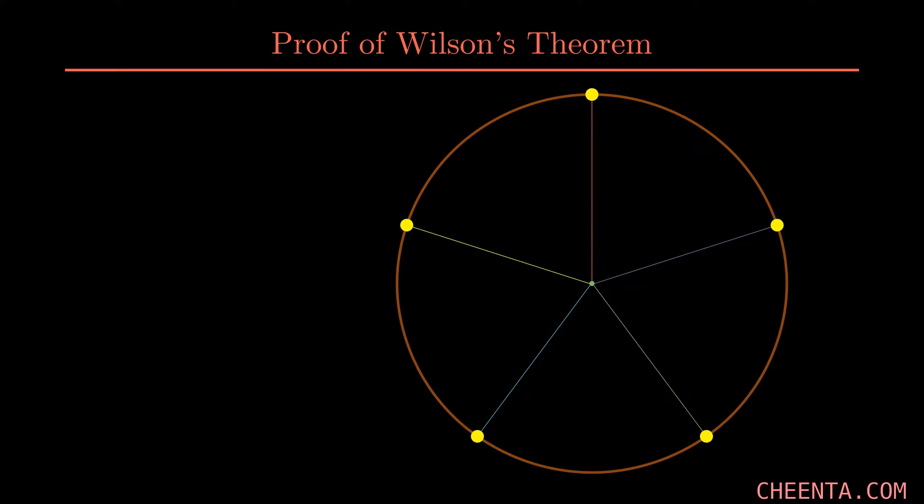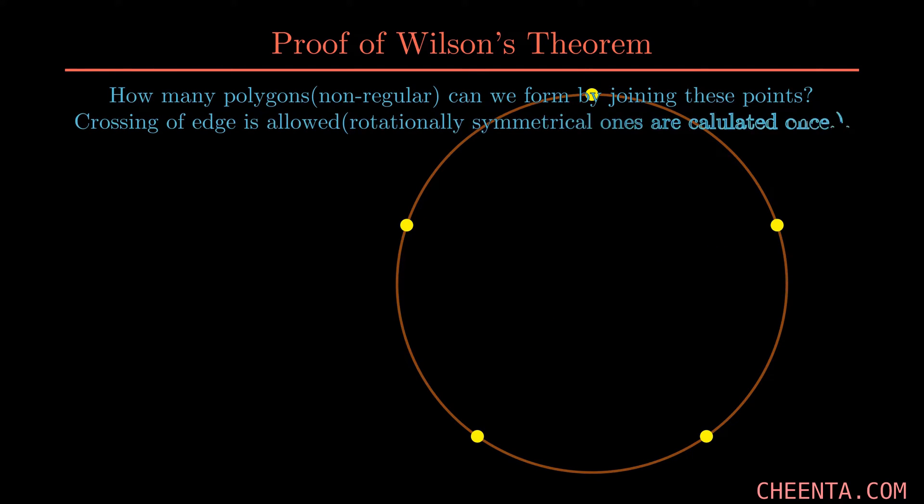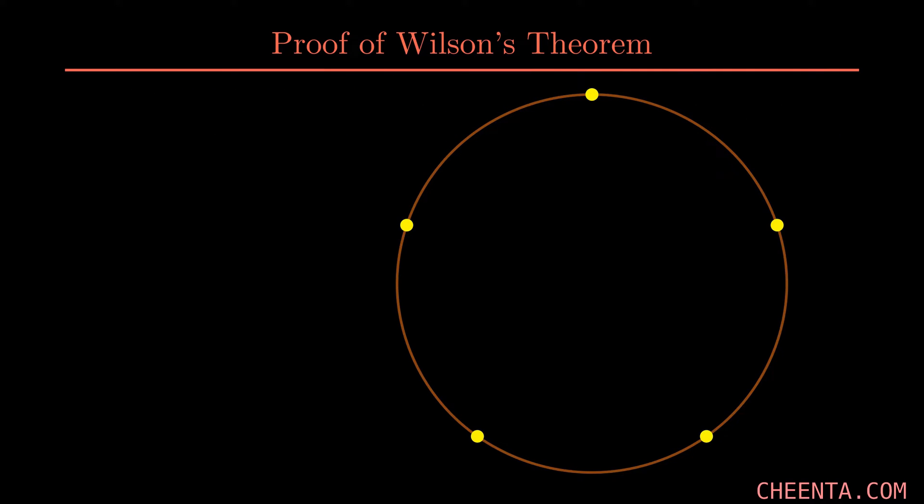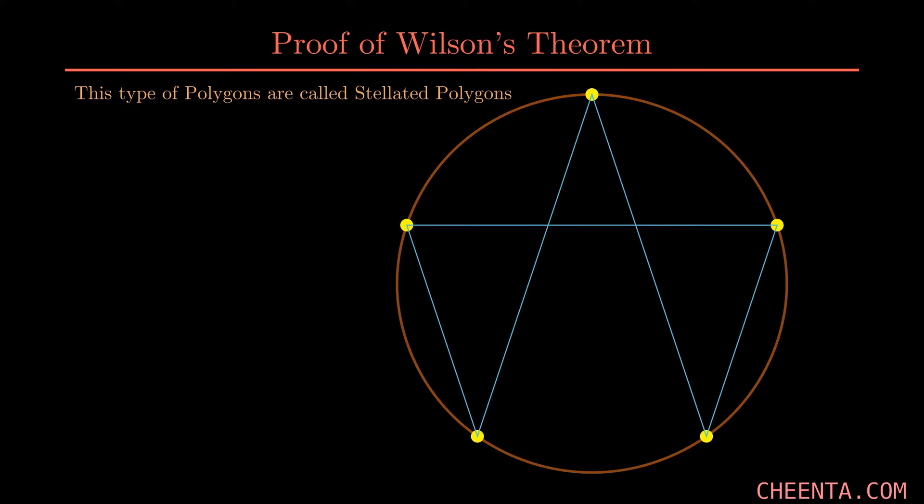Now to reach our goal, that is to prove this theorem, we have to answer this question: how many non-regular polygons can we create from this? We will count rotational symmetry once. There are many polygons that we can make; one of them is shown. This type of polygon has a special name as shown.